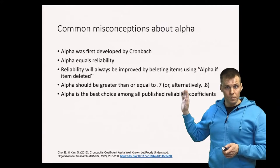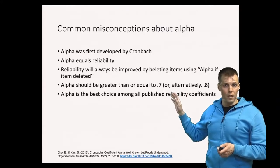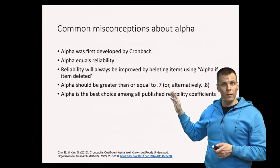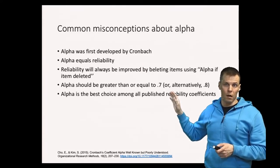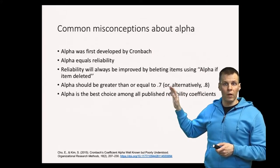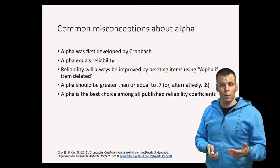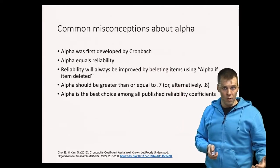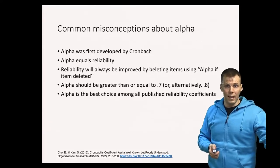Then there is the misconception about cutoffs. So if alpha equals 0.7 you're okay, if it's 0.69 your study is unpublishable. So that of course doesn't hold true. What the reliability, what kind of reliability do you require depends on the context. So if you are measuring something that no one has ever measured before then it's perhaps more acceptable to have an alpha of maybe even less than 0.7.